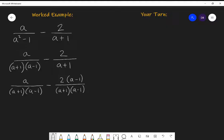So now I have two fractions with a common denominator. So now I can subtract them. But it would be easier before I subtract them if I have the second one expanded out. So I'll have A over A plus one, A minus one minus two A minus two over A plus one, A minus one.